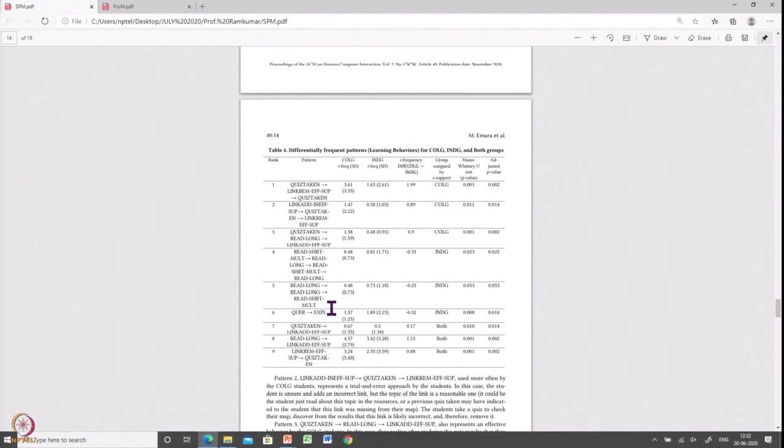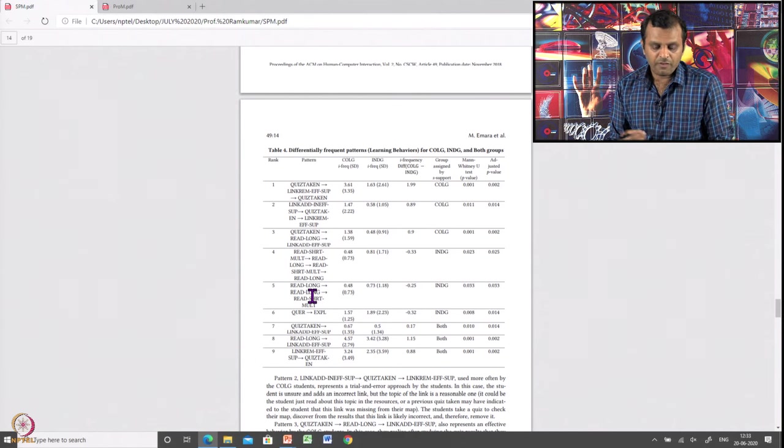With this table, these values, you can make a new inference on behavior difference between these two groups. For example, you can say that collaborative group students mostly had supportive links and take a quiz, and they removed ineffective links. Compared to individual group students, they simply read, read, read, read, read, which never occurred in the collaborative group, which occurred in very less frequency. Individuals who do not have someone to talk to, they are simply reading, reading, reading and trying to understand the meaning on their own.